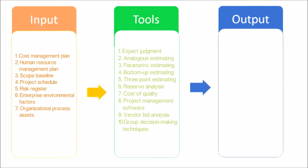Next, let's look at tools and techniques used in this process. Expert judgment, guided by historical information, provides valuable insight about the environment and information from prior similar projects. Analogous estimating uses values such as scope, cost, budget, and duration, or measures of scale such as size, weight, and complexity from a previous similar project as the basis for estimating the same parameter for a current project.